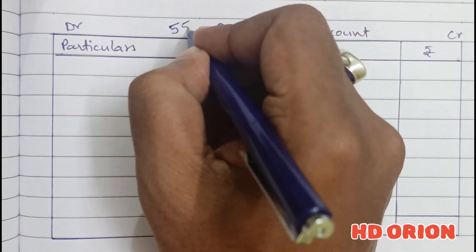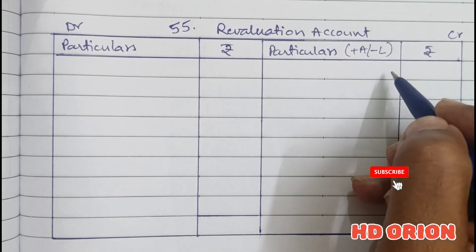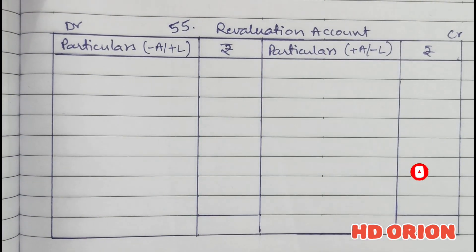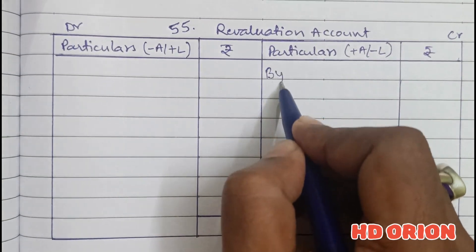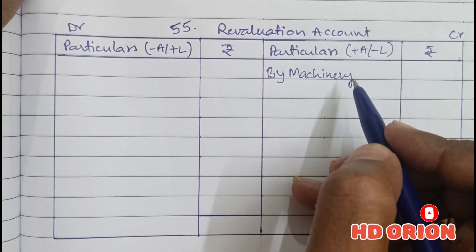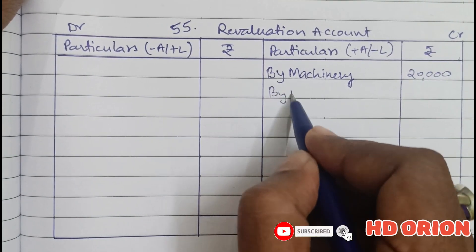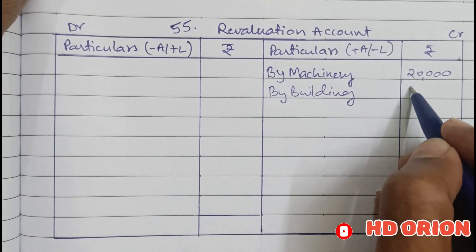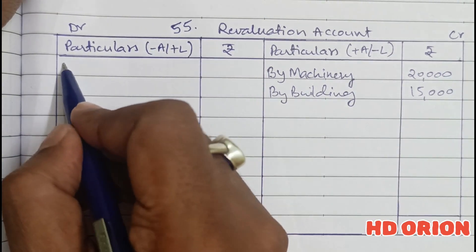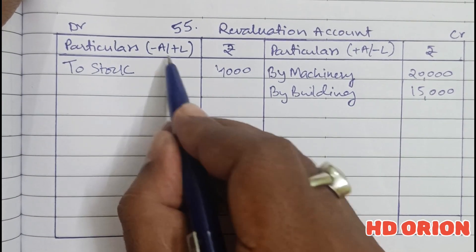Solution 55. In the revaluation account, increase in asset or decrease in liability is recorded on the credit side, and decrease in asset or increase in liability is on the debit side. Machinery is appreciated by rupees 20,000. Building is increased by 10%, so 10% of rupees 1,50,000 is rupees 15,000. Stock is overvalued so we reduce it to its actual value — it is overvalued by rupees 4,000, so that is a decrease in asset.